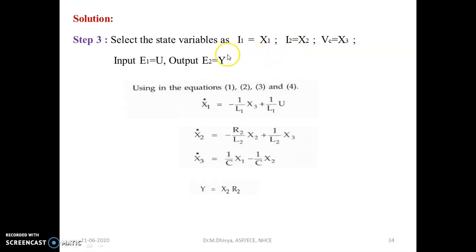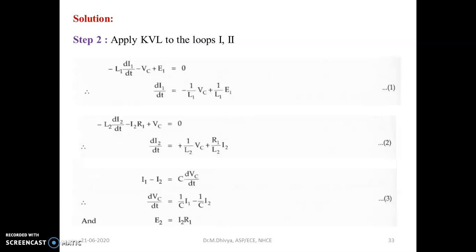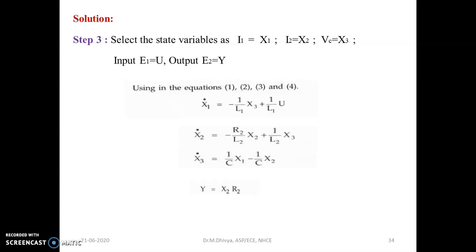Using the notations in equations 1, 2, 3, and 4, we get x1 dot, x2 dot, x3 dot, and the output equation. Substitute the state variables, output variable, and input variable into equations 1, 2, 3, and 4. We get x1 dot equals minus 1/L1 times x3 plus 1/L1 times u. Similarly, x2 dot and x3 dot are obtained, and the output equation is y equals x2 times R1.